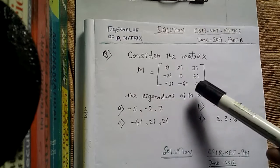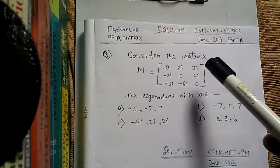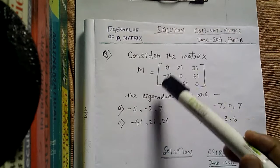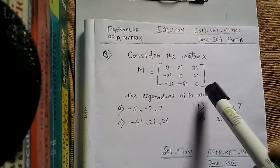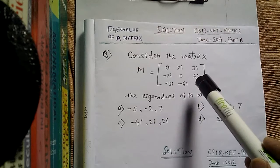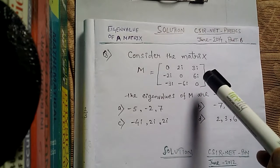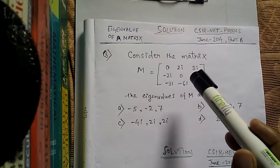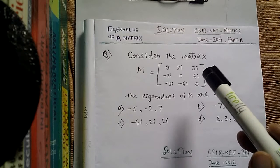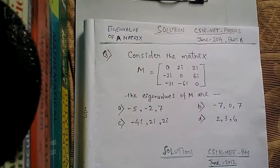Each option contains three eigenvalues because this is a square matrix of order three by three. A square matrix means the number of rows equals the number of columns. Here both are three, so it is a 3x3 square matrix and can have three eigenvalues. If this were a 2x2 square matrix, it would have had two eigenvalues.